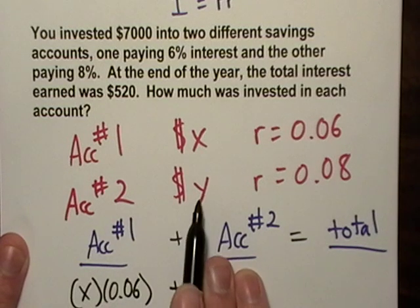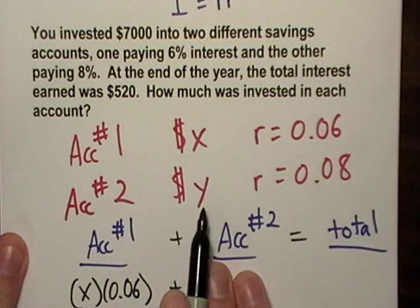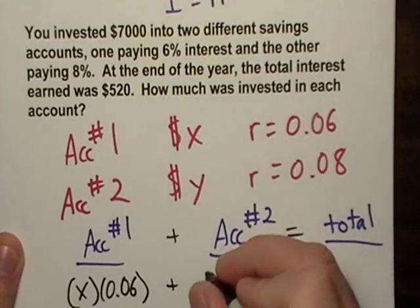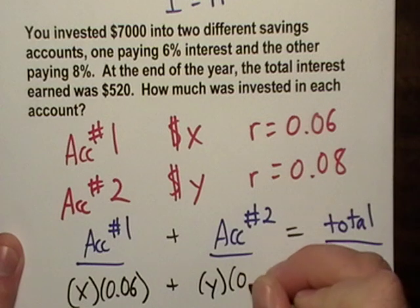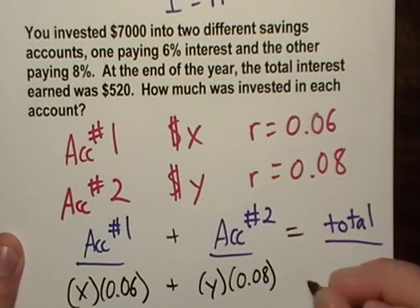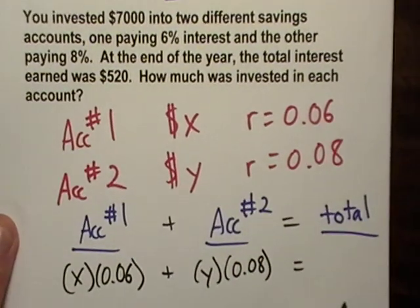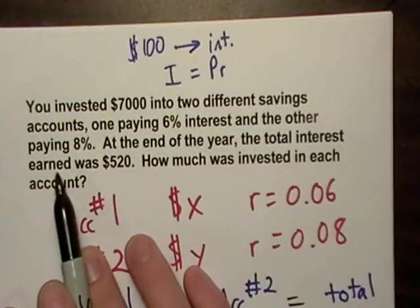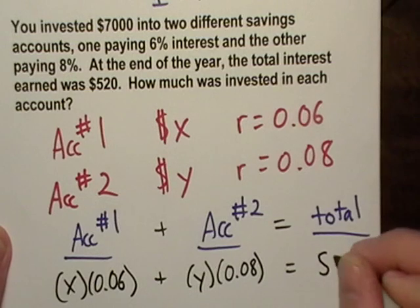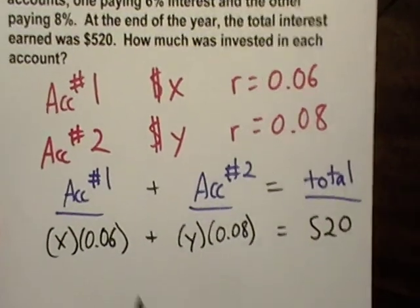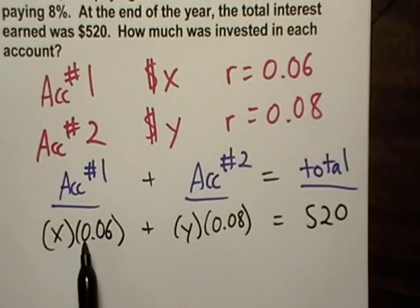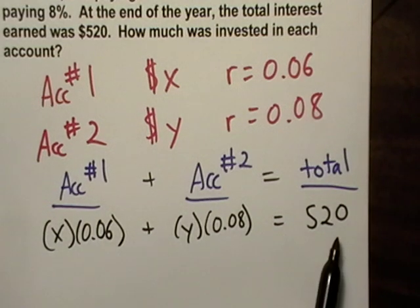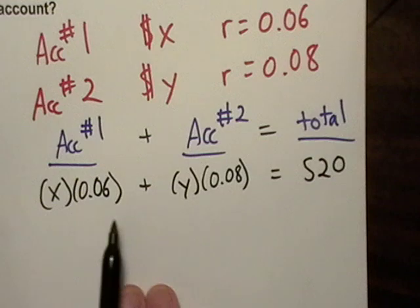And account number two, I don't know exactly how much I put in, so I called it Y. So we'll just say Y times 0.08 gives me the interest of account number two. Now it's given that the total interest is $520, so I'll write that there. So now I have an equation. I have interest in account number one plus interest in account number two equals total interest. Only problem is I've got an X and a Y here.